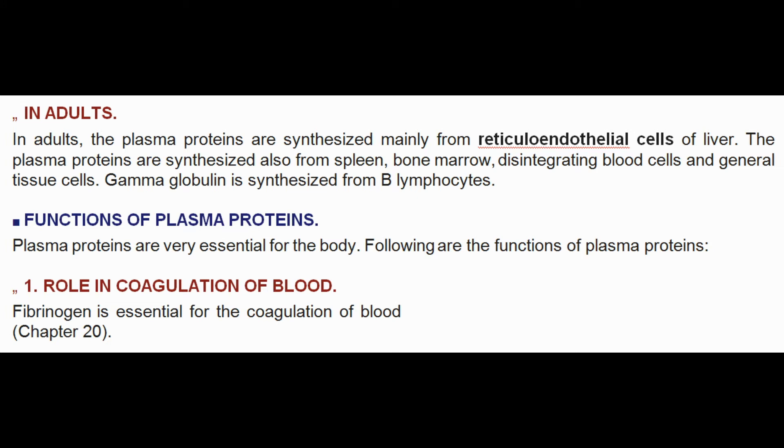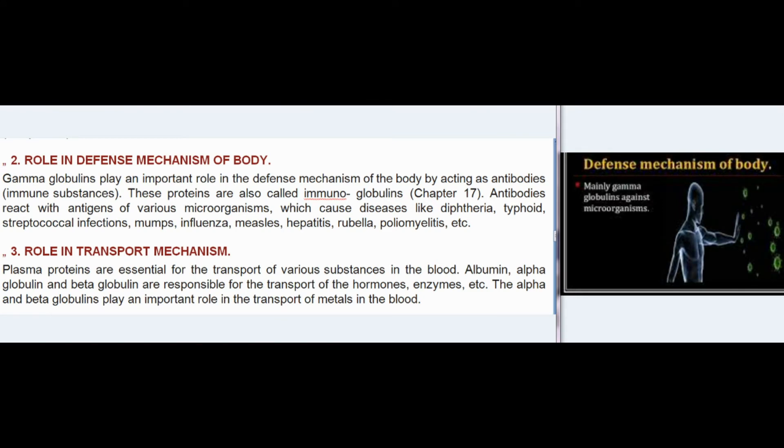Functions of plasma proteins: (1) Role in coagulation of blood — Fibrinogen is essential for coagulation. (2) Role in defense mechanism — Gamma globulins play an important role in the defense mechanism by acting as antibodies (immune substances), also called immunoglobulins. Antibodies react with antigens of various microorganisms causing diseases.